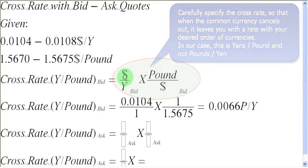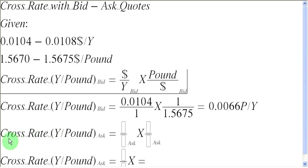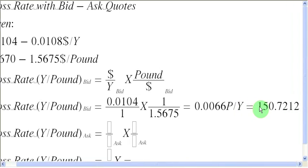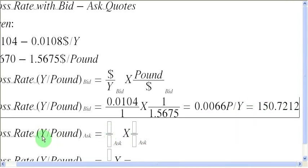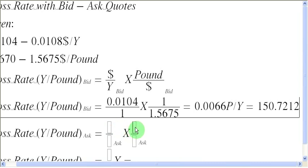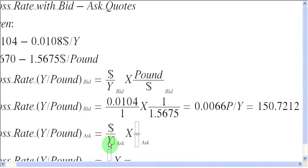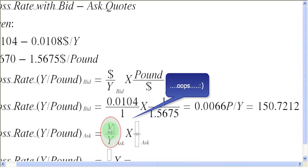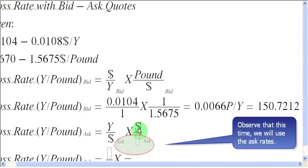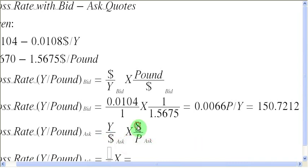So now let us return back to our cross rate calculation. This time we are going to find the ask rate between yens and pounds. I have to take care that I specify this fraction carefully so that when the dollars cancel out, I'm left with yens per pound. So I'm going to write yens in the numerator and dollar in the denominator for the first fraction. And since I want to cancel out my dollar, I should write a dollar here and a pound in the denominator of the second fraction so that when the dollars cancel out, I'm going to be left with yens per pound.